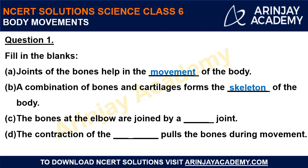C. The bones at the elbow are joined by a blank joint. The elbow is a joint due to which your upper and lower arm can move about each other. The upper arm and the lower arm, also known as the forearm, are connected at the elbow. They are joined by a hinge joint.